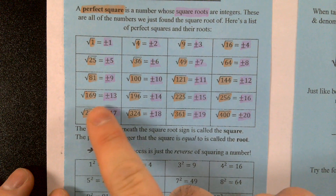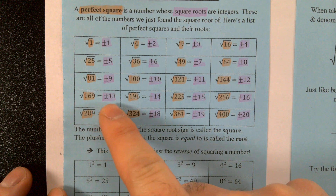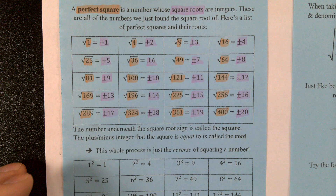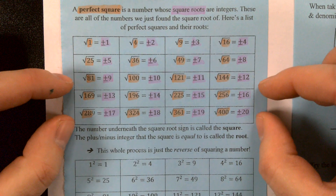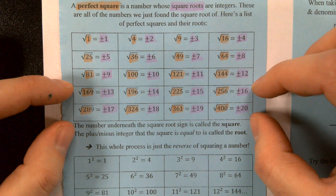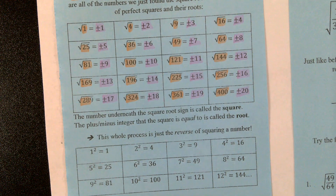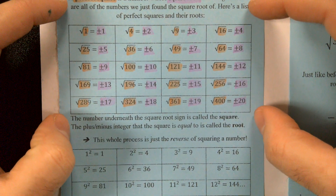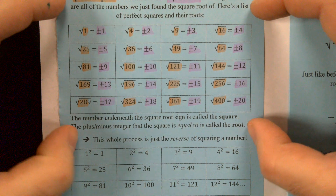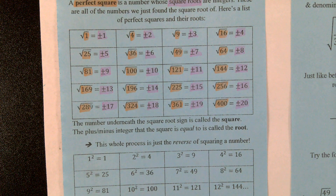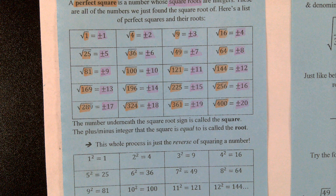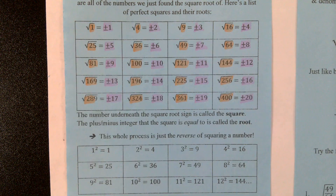Did anyone go to school where you continued on to 13 times 13 or 14 times 14? No — everyone pretty much stops at 12. So 13 through 20, you don't have to memorize them. It's helpful to memorize them, but you don't have to because this chart is in our notes. And are we allowed to use our notebooks on tests? Yes, we are. So it's not a problem referring back to this chart throughout this unit, even when we're taking our test.